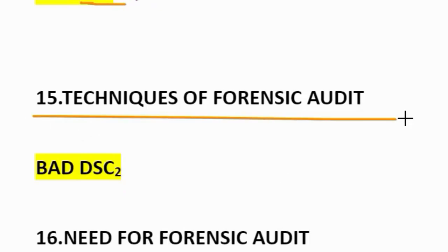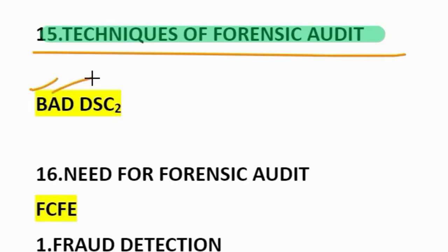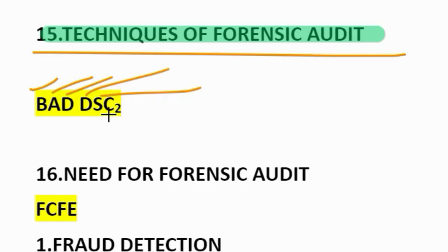Fifteenth question: techniques of forensic auditor. How to remember? BADDSC — Digital Signature Certificate. B stands for benchmarking. A stands for analytical tools. D for digital techniques. BAD completed. Then DSC: D stands for data mining techniques, S stands for system analysis, C stands for common software tools, and another C for CATs. BADDSC — Digital Signature Certificate — is completed.